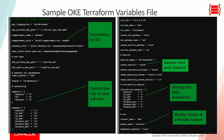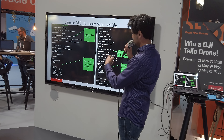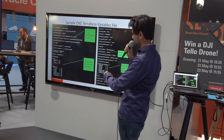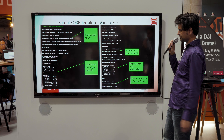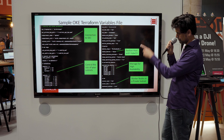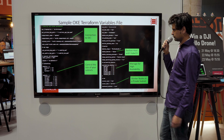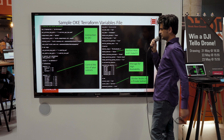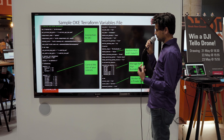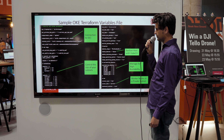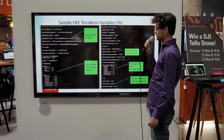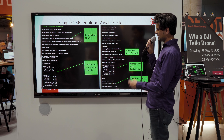Here's the Terraform variables file. I want to make a couple of call-outs on some of the interesting parts. Essentially, if you download this and store it locally, these are the parts where you add your data and configuration. You'd need to connect to the OCI console and supply your user data — your OCI identifier, account information, and compartment. You also have the ability to control the size of your subnets for your worker nodes and load balancers.